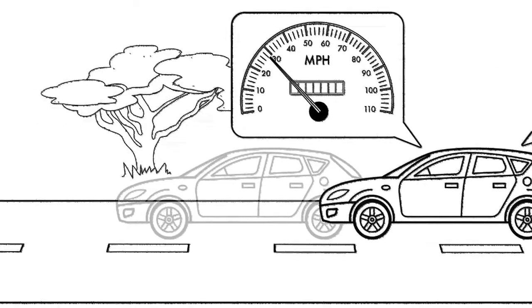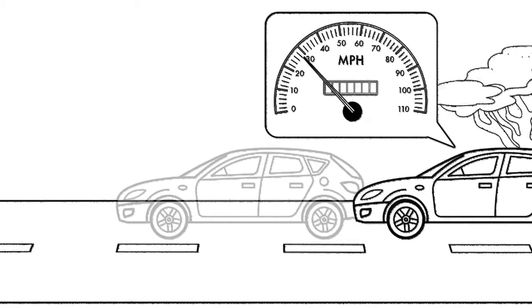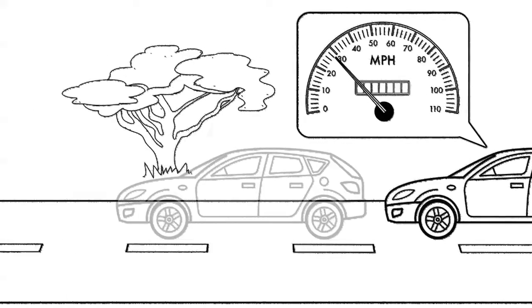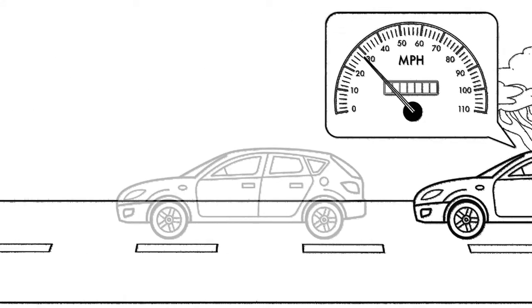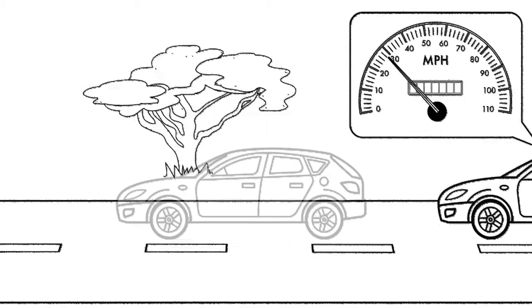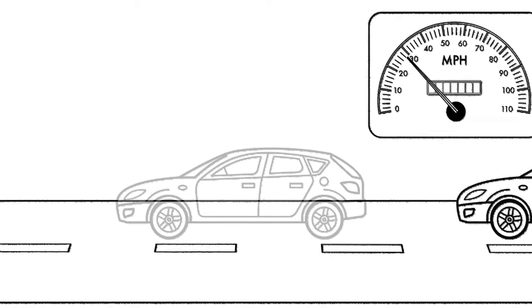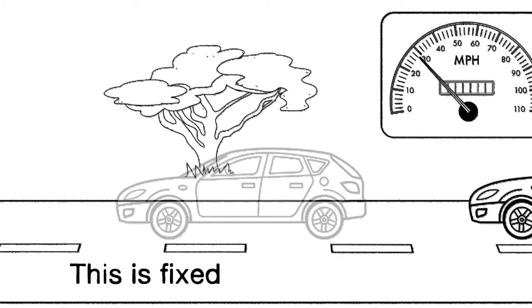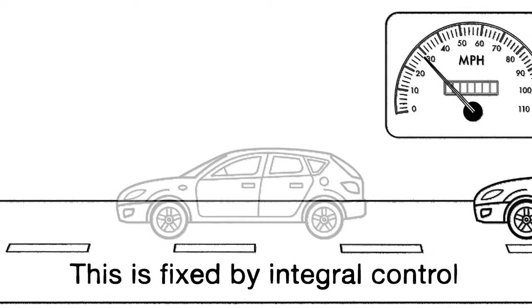What we need is something that comes more into play the longer the error exists, however small it is. The constant error of even a fraction of an MPH will accumulate until it is big enough that we need to take corrective action. This is called integral control.